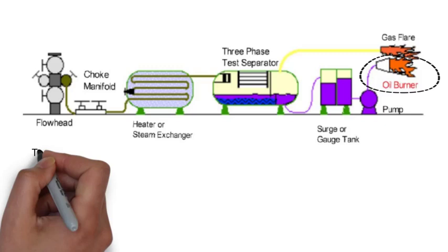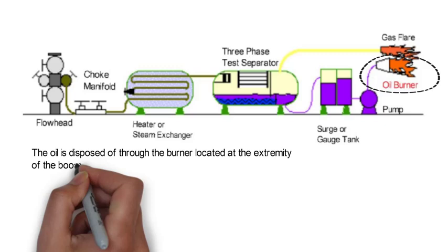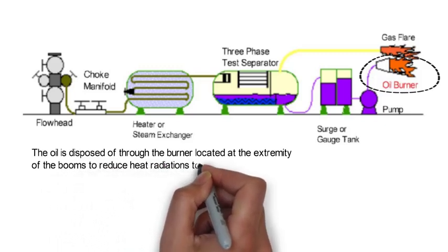The oil is disposed of through the burner located at the extremity of the booms to reduce heat radiations towards the rig.